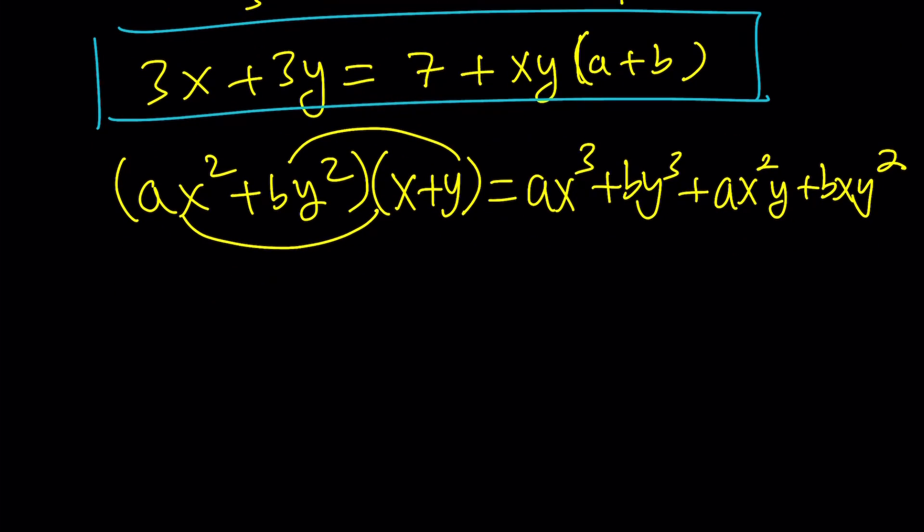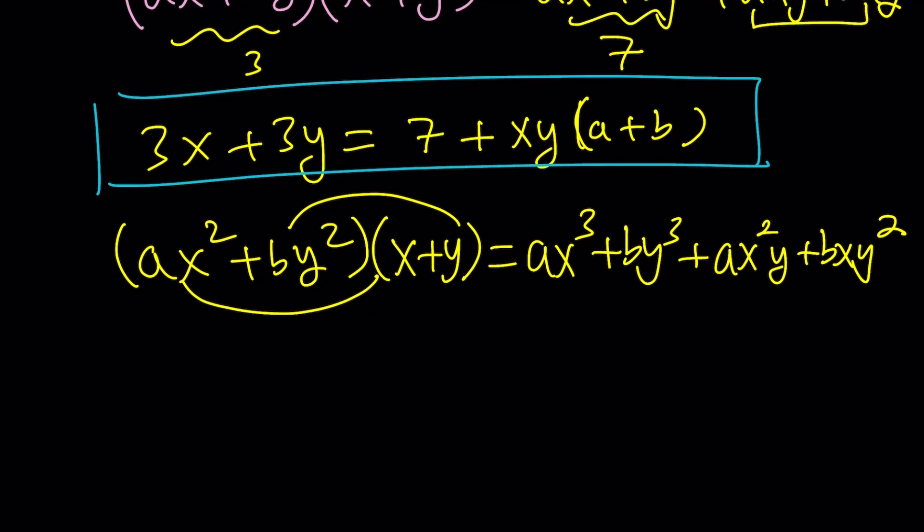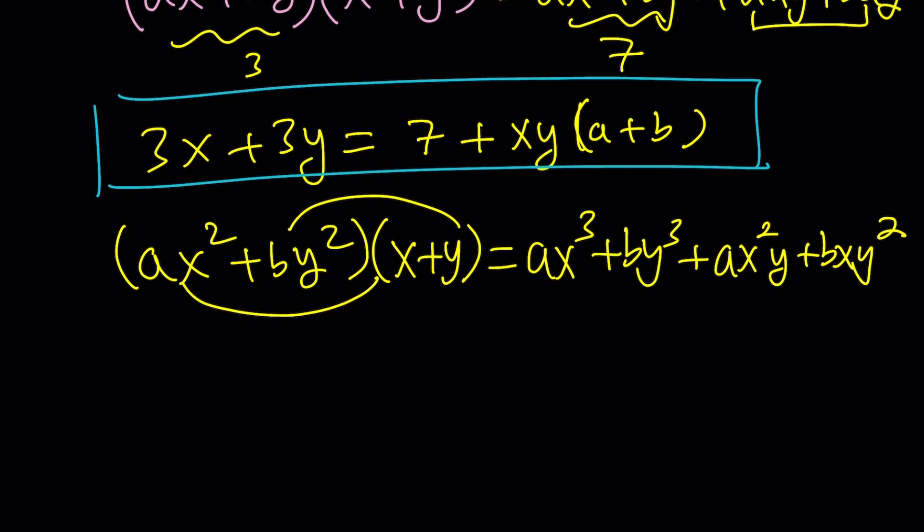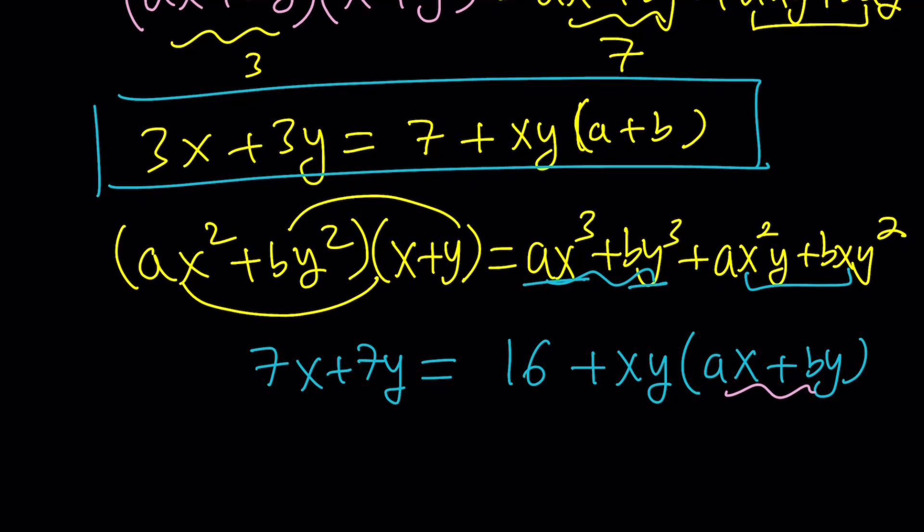Awesome. Let's go ahead and simplify this a little bit more. ax squared plus by squared is given, which is 7. So this is 7x plus 7y. And the right-hand side, these two, we already know, they add up to 16. Good. And then these two can be factored. We can take out xy. And inside, we get something that should be familiar, ax plus by.